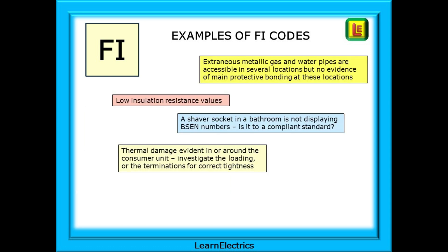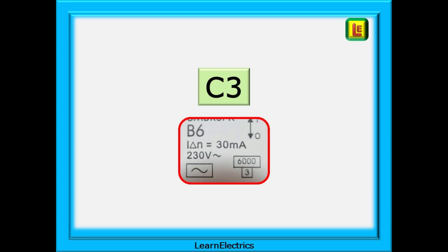Some other FI issues: similar to the last example, you identify that a circuit has low insulation resistance readings, but there is not the time nor expectation for you to spend an hour or more tracing the problem. This is further investigation and remedial work — it might be you that does it, but this is a separate contract to the actual inspection.